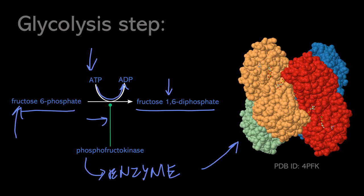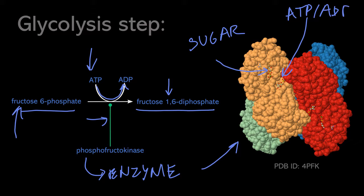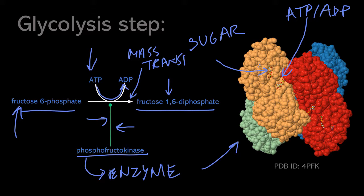Just to point out something on the enzyme itself: it has binding sites for the sugar, either fructose-6-phosphate or fructose-1,6-diphosphate, and it also has a binding site for ATP or ADP. This is an example of one of the reactions in a metabolic network where the enzyme is activating the conversion of fructose-6-phosphate to fructose-1,6-diphosphate. This white arrow is showing mass transfer, both in the fructose conversion and in the conversion of ATP to ADP.